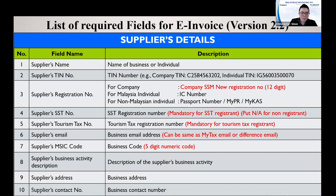You also need your MSIC code — if you don't know it, check with your tax agent or company secretary. The business activity description should state what your business does; for example, if you are in trading, mention what items you are trading. You also need your business address and business contact number.